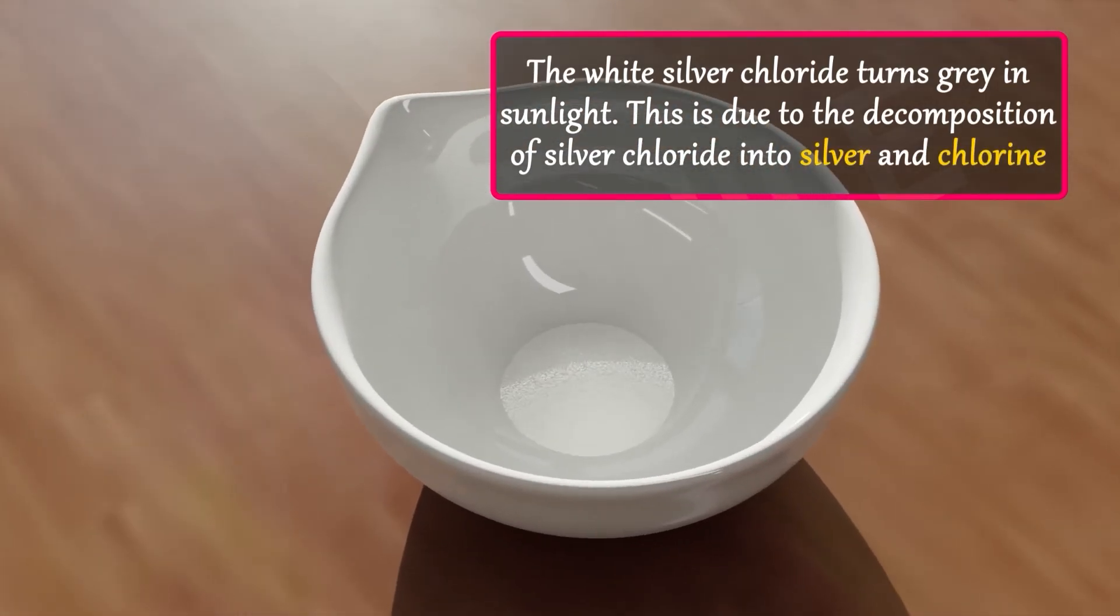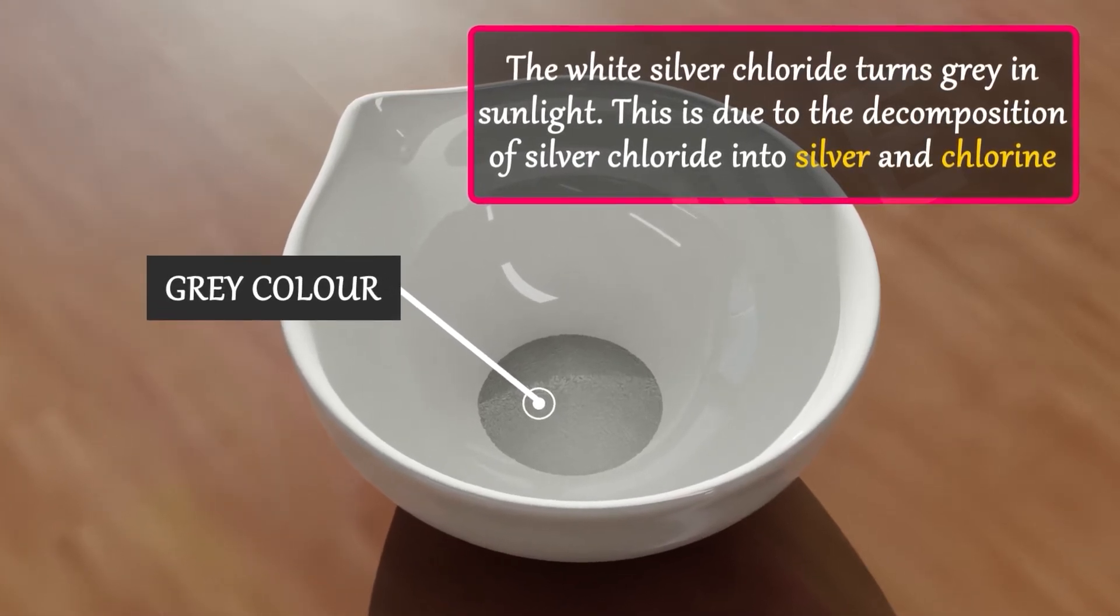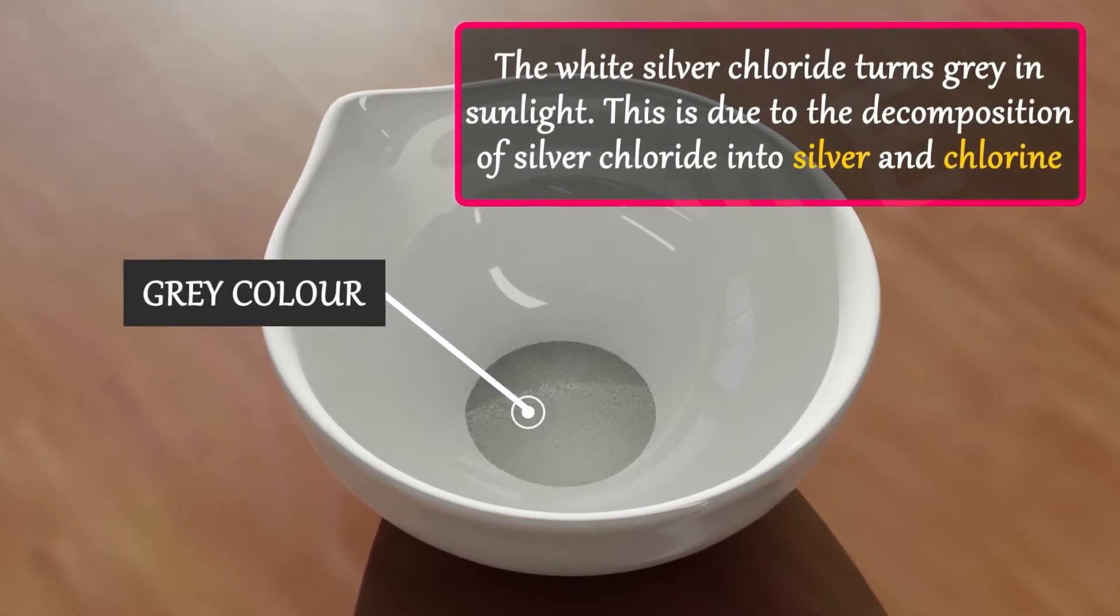Now, the white silver chloride turns grey in sunlight. This is due to the decomposition of silver chloride into silver and chlorine.